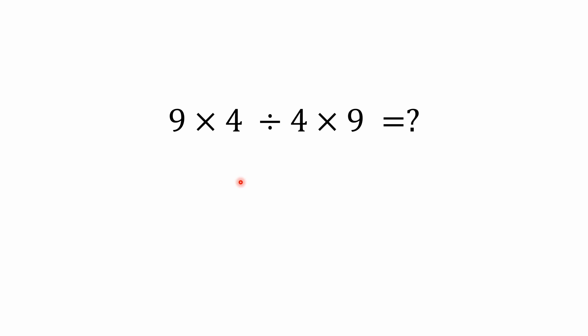Hello everybody and welcome back to the math puzzle crash course. We have a simple mixed operations problem here that combines multiplication with division. I normally stay away from these problems that include the obelus, but I'm going to go ahead and do it anyway. I'll work through what I would consider to be the standard interpretation of this problem. If you'd like, you can pause the video and try to work it out yourself.